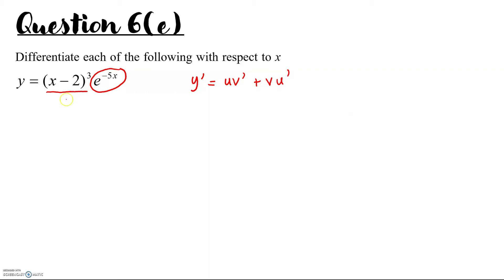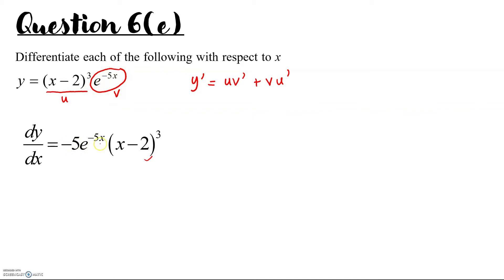Let's say the first function is u and the second function is v. So our dy/dx: we copy u, which is (x minus 2) cubed, and differentiate v — differentiating e to the negative 5x gives negative 5·e to the negative 5x. Then plus: copy v, which is e to the negative 5x, and differentiate u — u prime is 3, bring it in front, copy back the bracket, and the power of the bracket minus 1 gives 2. So this is your differentiation of y.